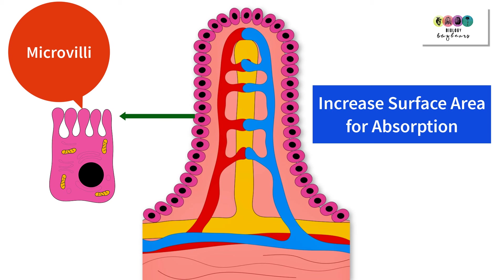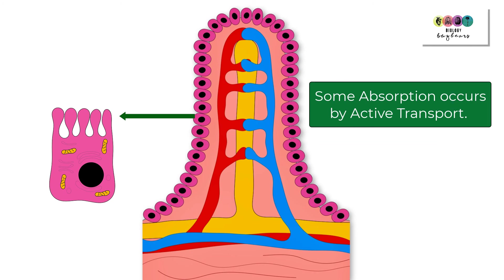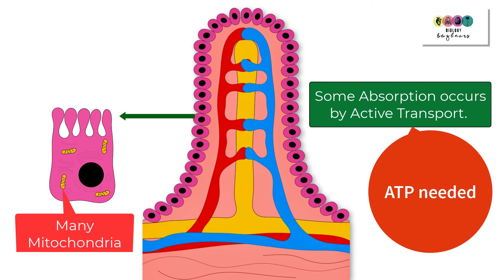Some materials are absorbed by active transport, which involves ATP. ATP is made in the process of respiration, which takes place in the mitochondria. So these cells would have many mitochondria.